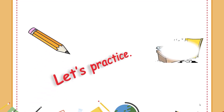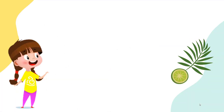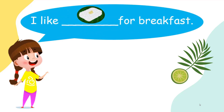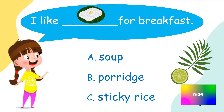Now it's time to practice. Are you ready? Let's go. You read the sentence and choose the correct answer. I like ___ for breakfast. You have three options: A. Soup, B. Porridge, C. Sticky rice. You have five seconds. Go. What's your answer? Sticky rice, miss. Let's check it. Great job!